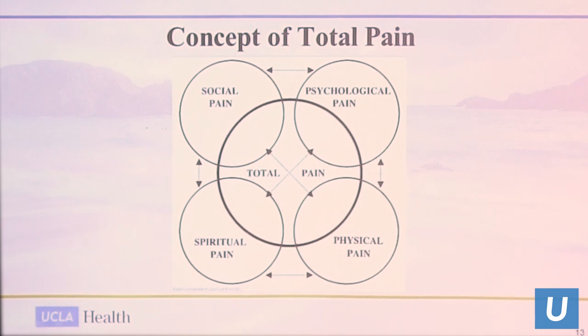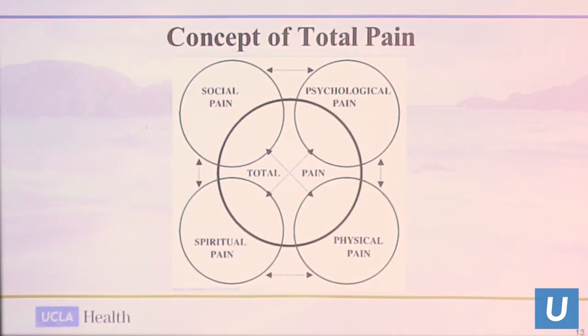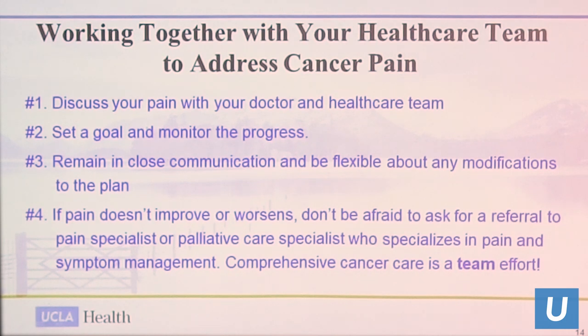The spiritual component includes anger at fate, anger with God, fear of the unknown, and loss of faith — all of which can also manifest as pain. Sometimes when we've exhausted the WHO ladder and even step four interventions and the pain never improves, we have to consider that other domains are contributing to the patient's experience of pain.